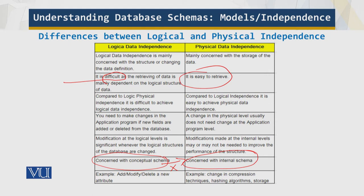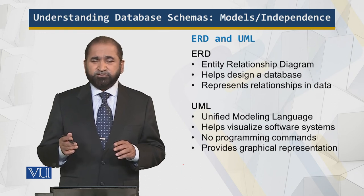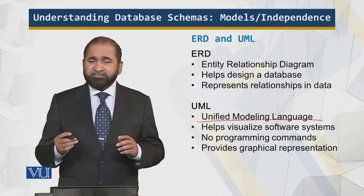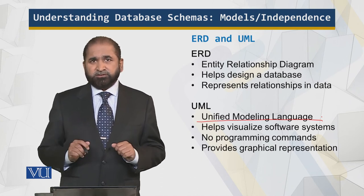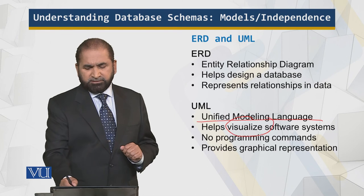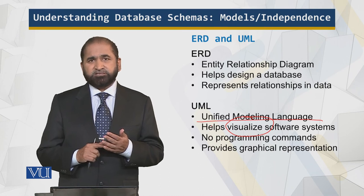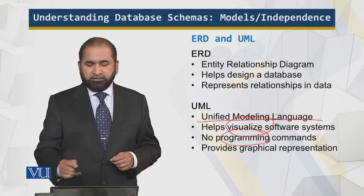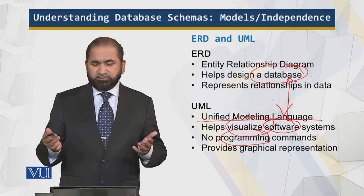So how do we model these things? We have the ERD — entity relationship diagram — and we have UML, unified modeling language. An entity relationship diagram is a single diagram, but in UML there are about four or five diagrams. UML helps visualize the software system, but unlike traditional programming like Java, C, C#, or Python, there are no programming commands — this is for software systems, while ERD is for database systems. They are not the same.